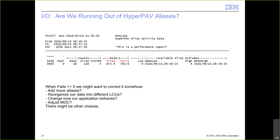Running out of HyperPAV aliases is shown in report 327 HP alias. In this example, the system is trying to get an alias to a logical control unit at a rate of 875 per second and failing at a rate of 763 per second — not enough aliases for this LCU. Fails should be near zero. The right-hand columns indicate peak values, helping correlate alias failures with known workload activity.